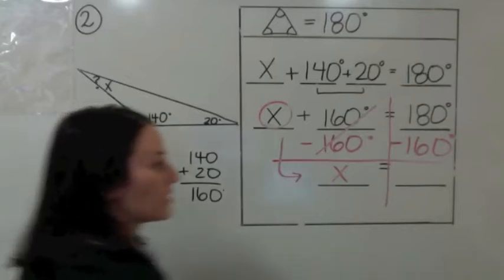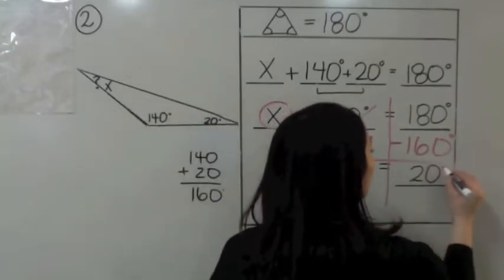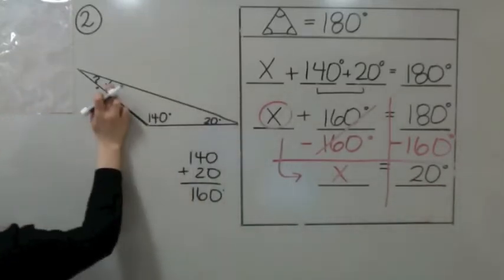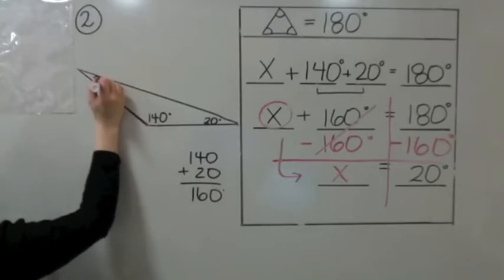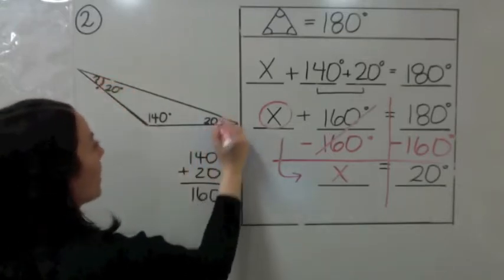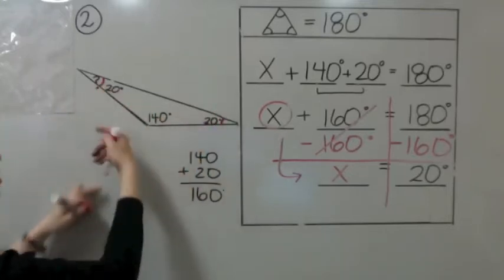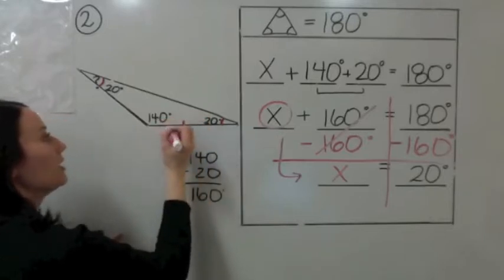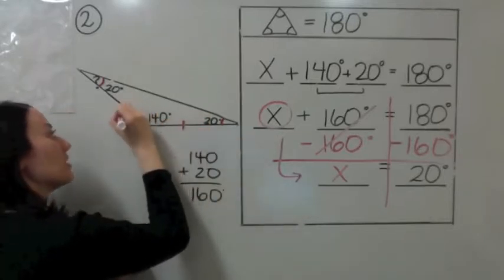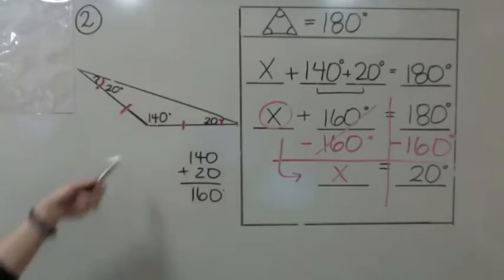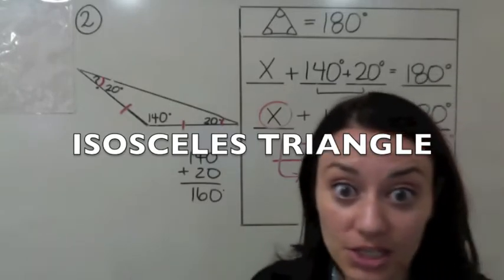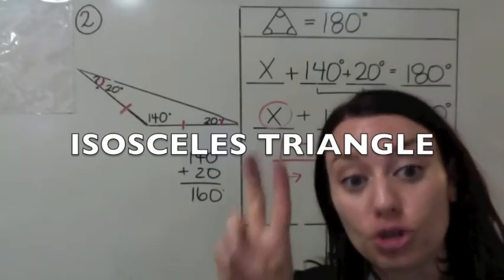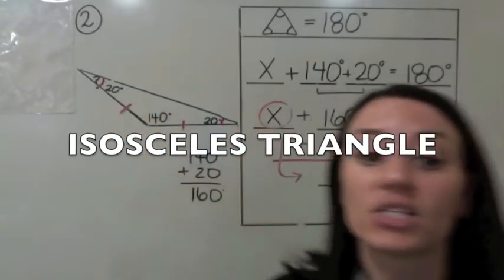180 minus 160 is 20 degrees. So X equals 20 degrees. That means this angle is equal to this other angle, and the sides that are opposite are also going to be equal. Two equal angles with two equal opposite sides — what kind of triangle is this? It's an isosceles triangle.